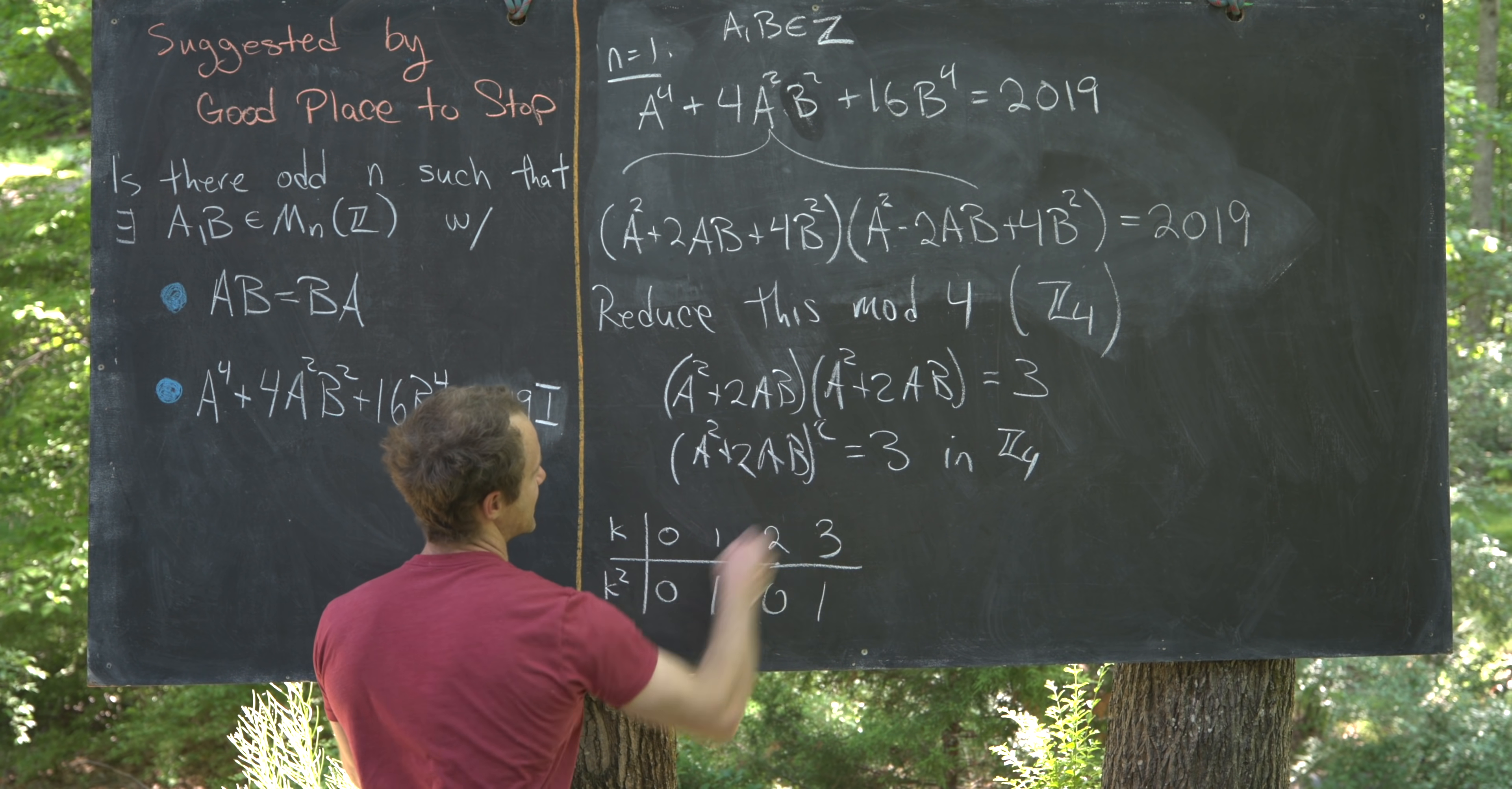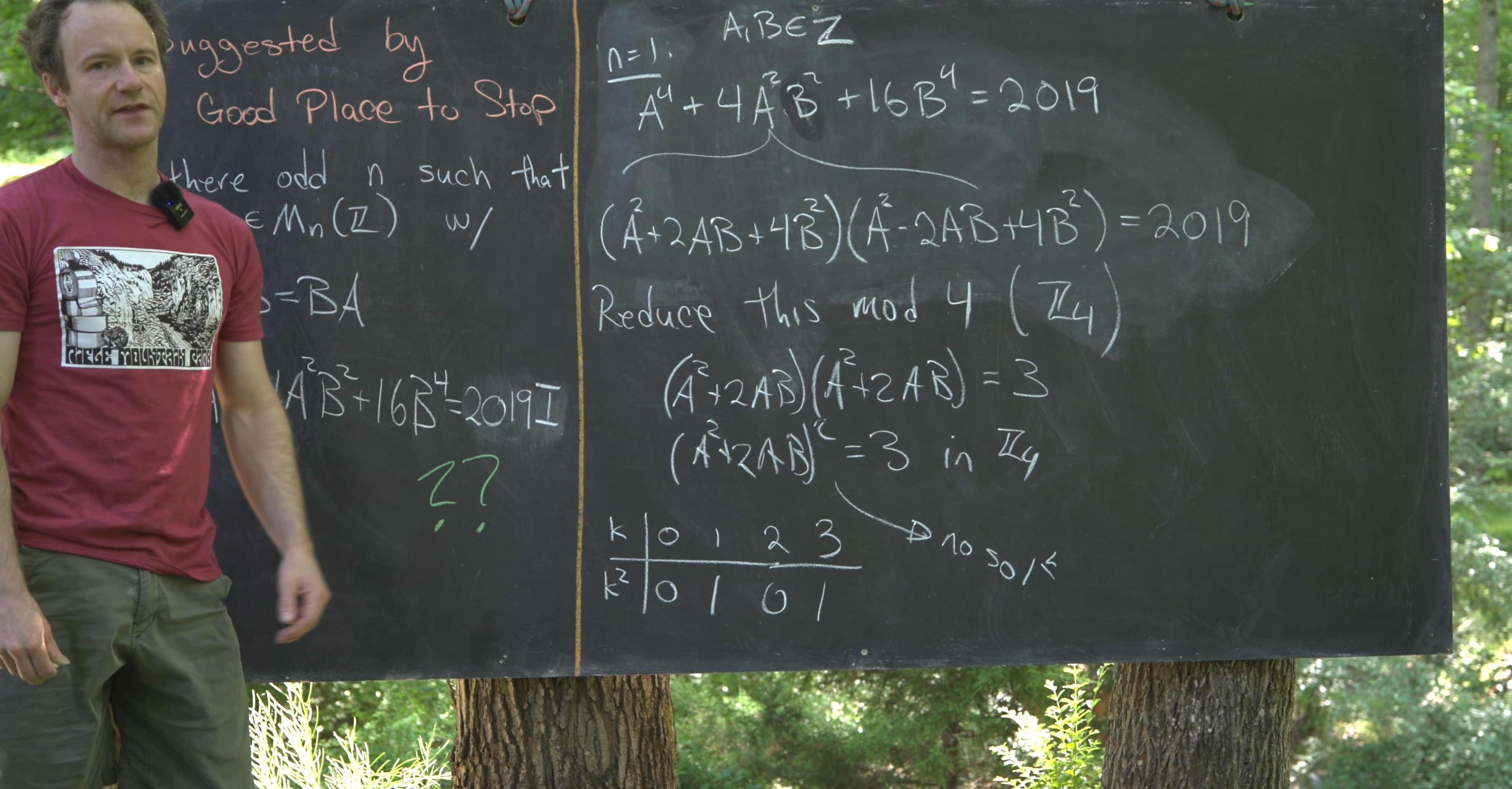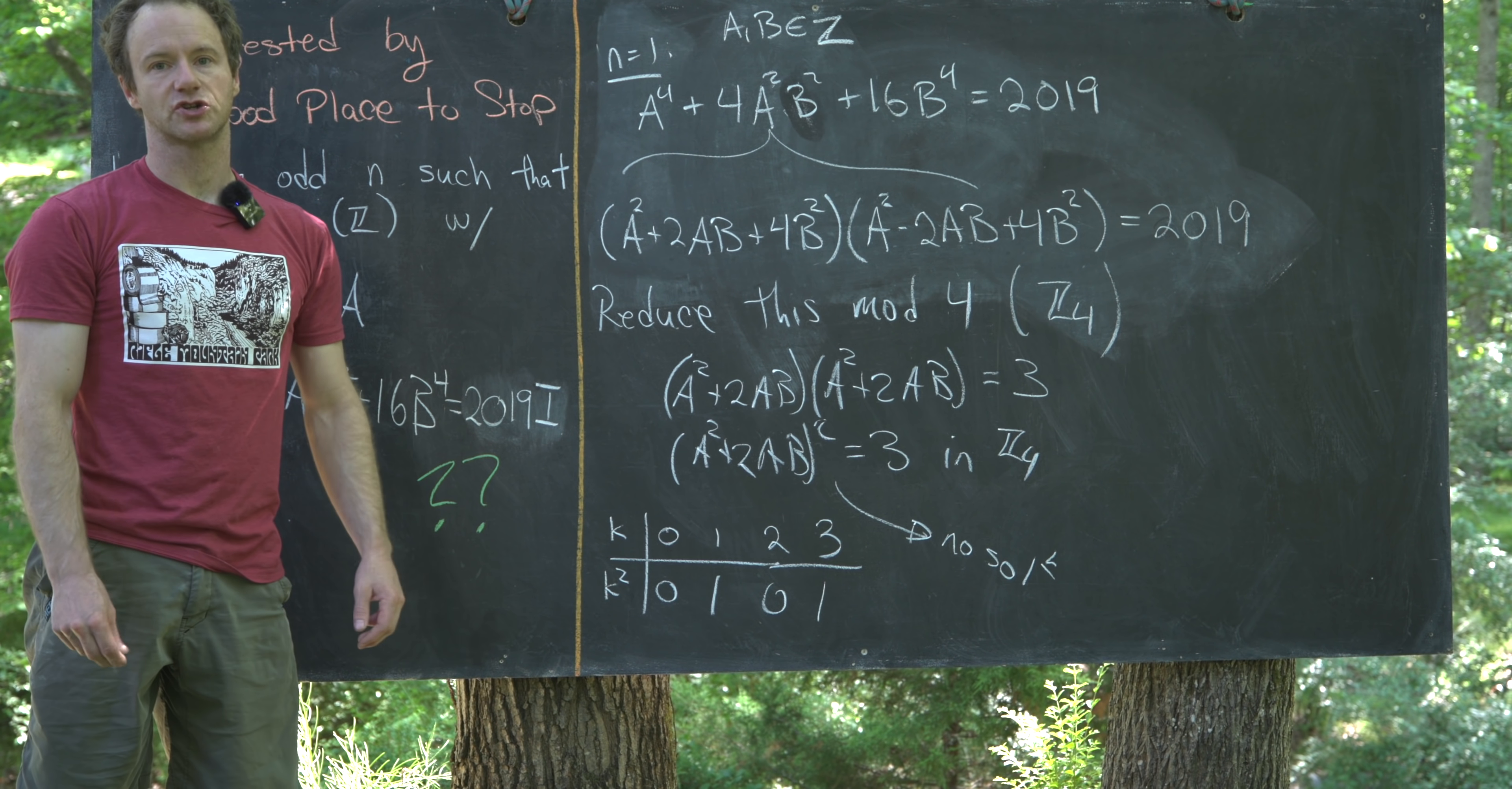Notice that we never get 3 here. So, that means that there is no solution for this n equals 1 case. That actually gives us a guess that there probably shouldn't be a solution for the higher n cases.